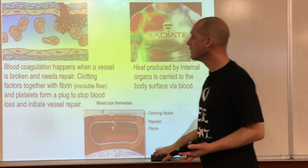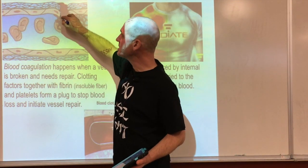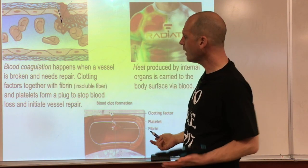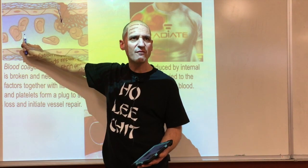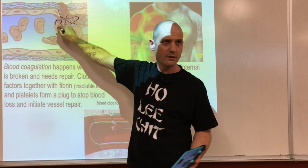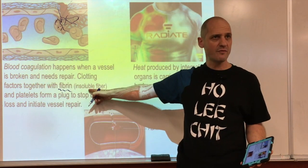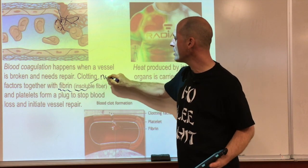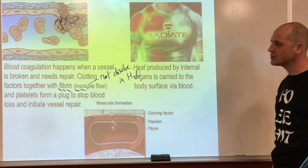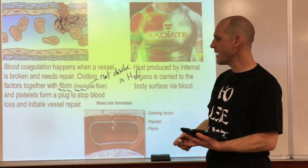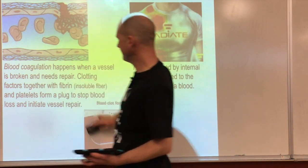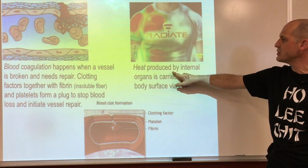Blood coagulation happens when a vessel is broken and needs repair. The insoluble fiber fibrinogen becomes strands that precipitate out and make a patch called fibrin - an insoluble fiber that does not dissolve in water. Together with platelets, they patch up that break and repair the vessel.